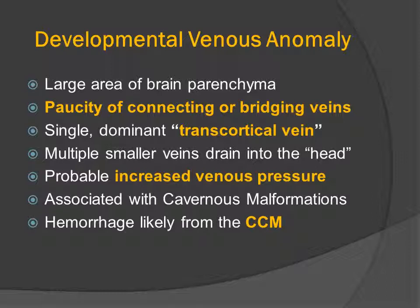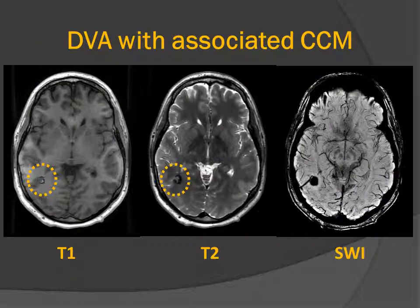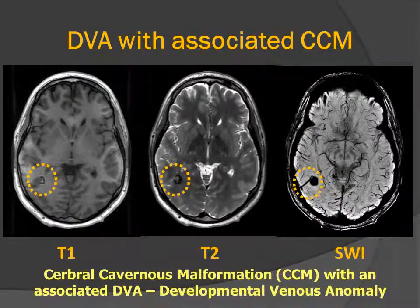A developmental venous anomaly is a problem in the development of the venous drainage, where a large area of brain parenchyma, instead of connecting to the dural sinuses by multiple bridging veins, instead connects through a single dominant transmantle or transcortical vein. Multiple small veins drain into the head of this trunk. They are often associated with increased venous pressure, which may actually be the cause for the development of cavernous malformations. Symptomatic hemorrhage is typically related to the CCM and not the DVA. Our case is fairly typical of an asymptomatic incidentaloma — a cerebral cavernous malformation associated with a developmental venous anomaly.